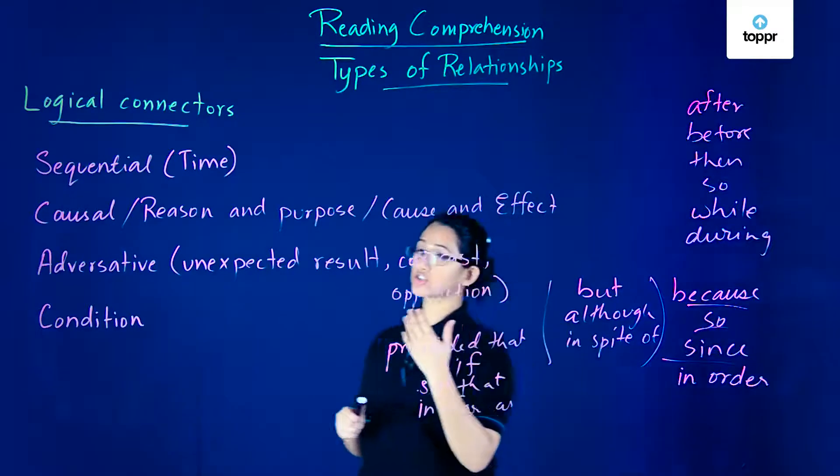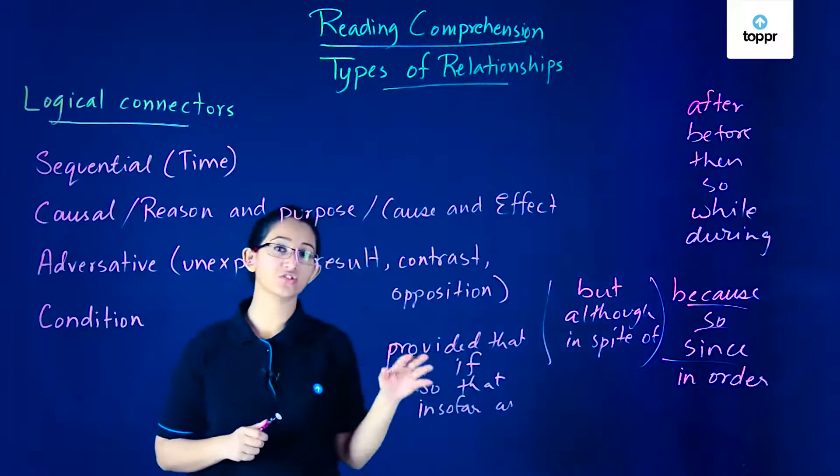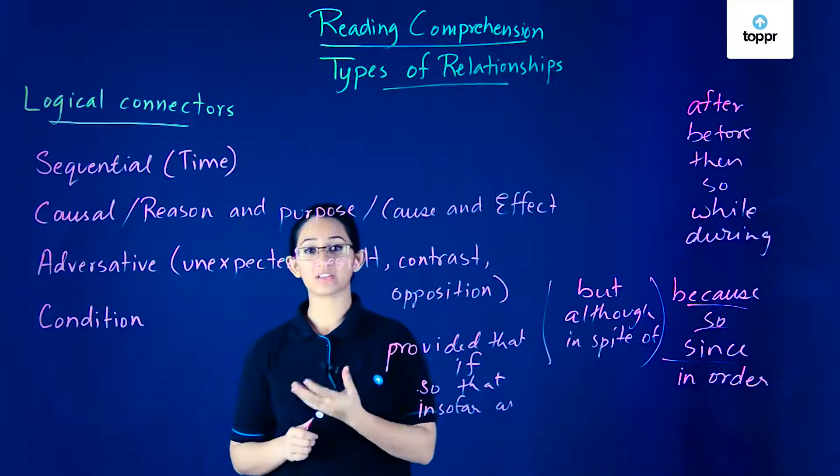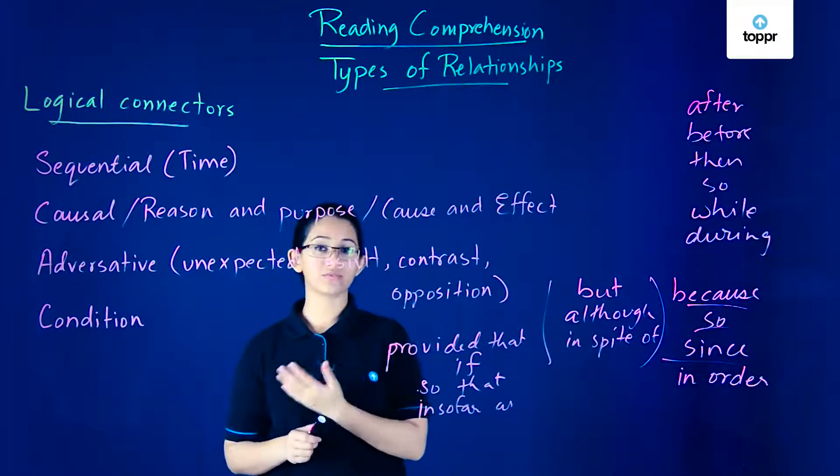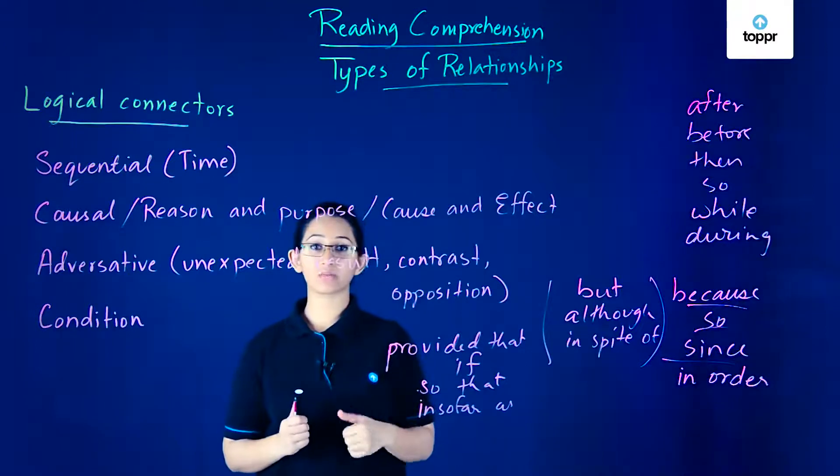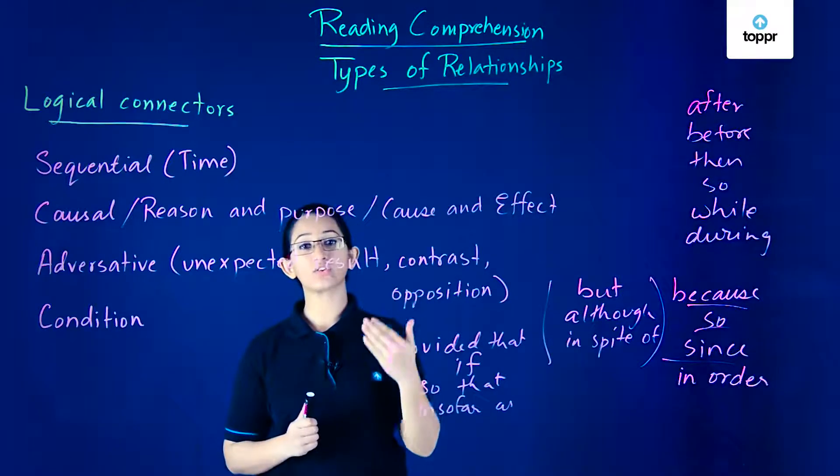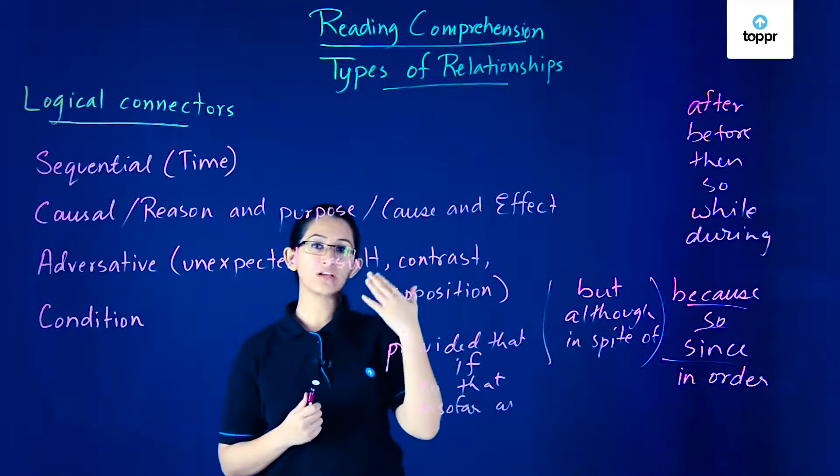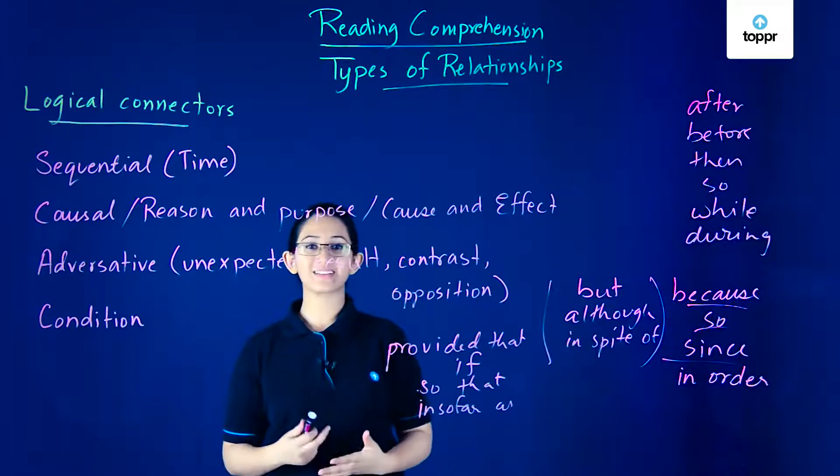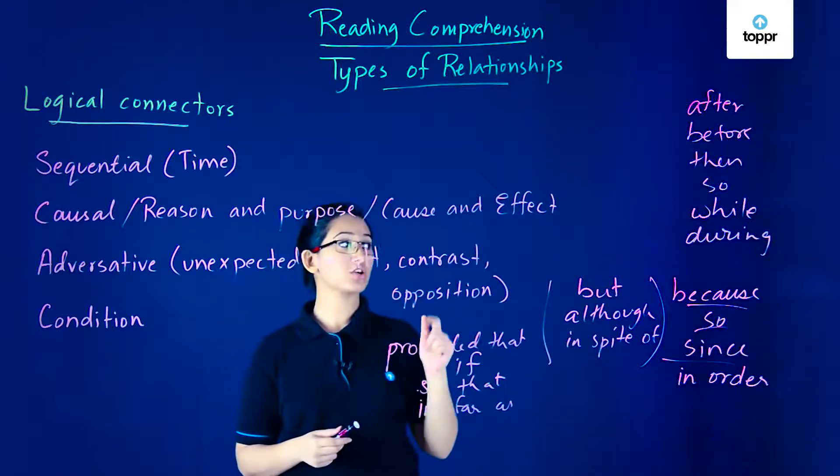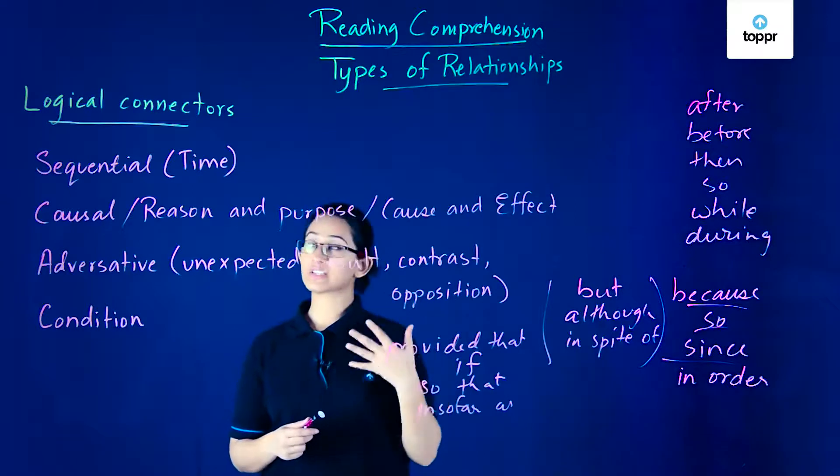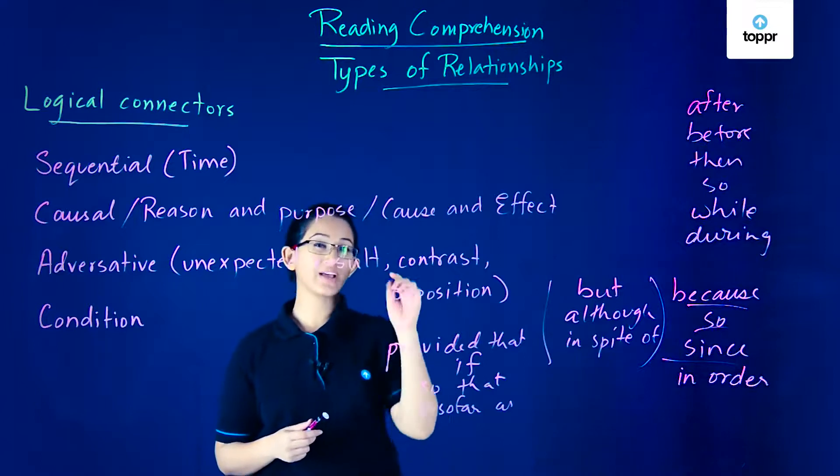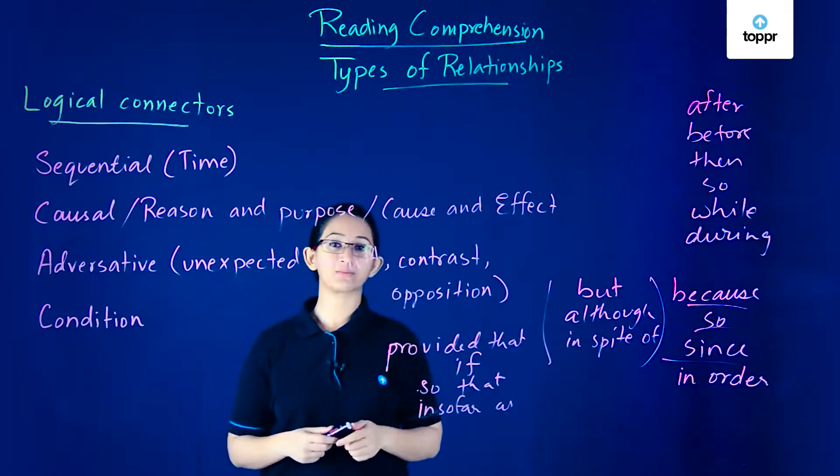Using all of these logical connectors and taking a look at the prepositions and conjunctions we have in the passage can really help us figure out what relationship there is between different paragraphs or two different parts of the text. This is important because it'll help you figure out what the author is trying to say through the passage and in what sequence or manner and what meaning they're trying to convey. Next time you read a passage, make sure you take a look at all of these logical connectors. Keep an eye out for them and whenever you find them, mark them out so you know exactly where to look for these types of relationships.